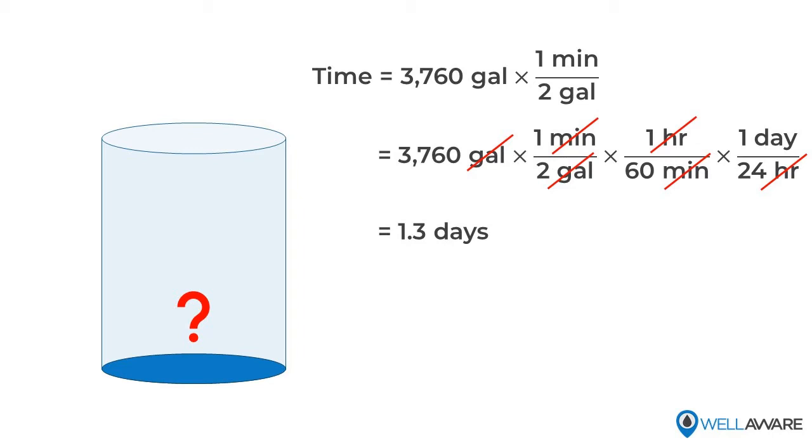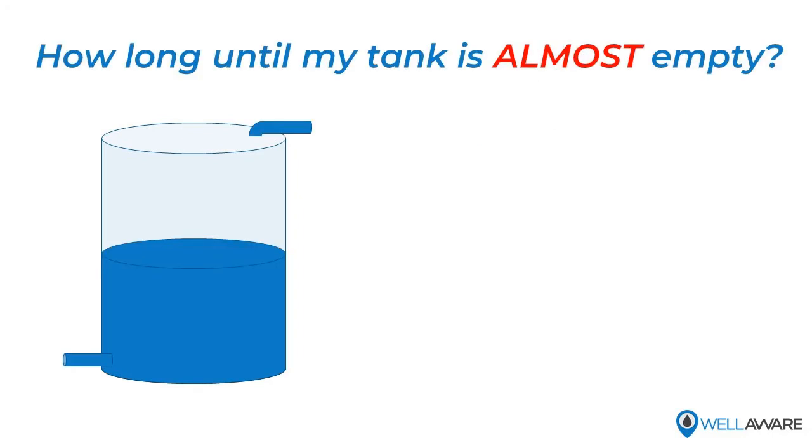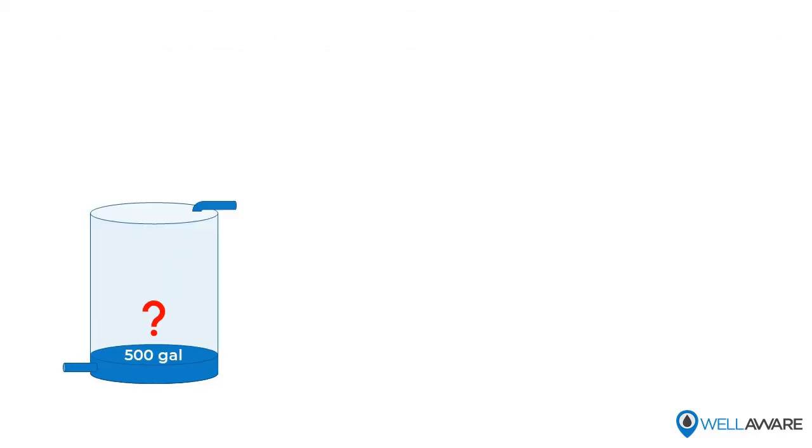Now one of the things we know is that most people don't want their tank to run completely empty. So what if we wanted to calculate the number of days until our tank was almost empty? We can do this in one of two ways. We can either calculate when a tank will have a certain volume of water in it - say we want to predict when there are 500 gallons left. To do this, we just subtract the target volume from the current volume before we divide by the net flow. So in our example, we'd have...